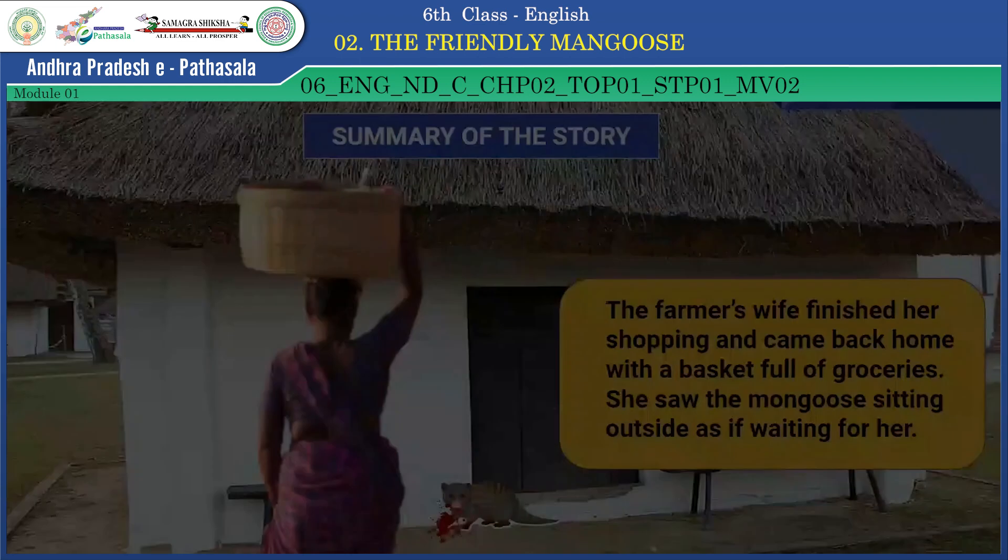She ran out looking for the mongoose. 'Oh! You saved my child! You killed the snake! What have I done?' she cried, touching the mongoose, who lay dead and still, unaware of her sobbing. The farmer's wife, who had acted hastily and rashly, stared alone at the dead mongoose. Then she heard the baby crying. Wiping her tears, she went in to feed him. By this lesson, we are supposed to know the moral: we should not take hasty decisions. Haste makes waste.